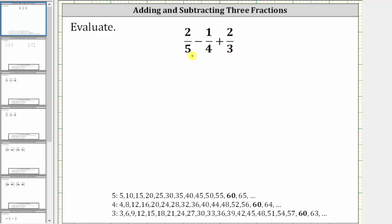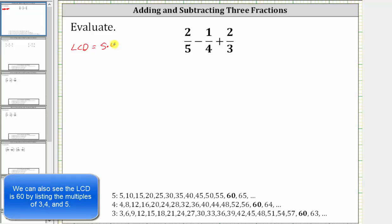And since the only common factor among five, four, and three is one, the least common denominator LCD is equal to the product of the denominators, which is five times four times three, which is equal to 60.